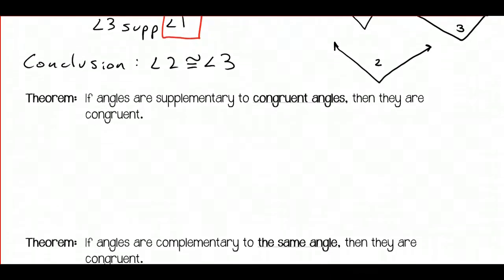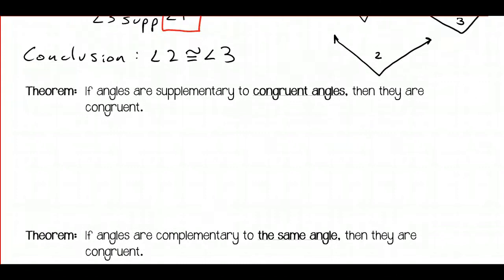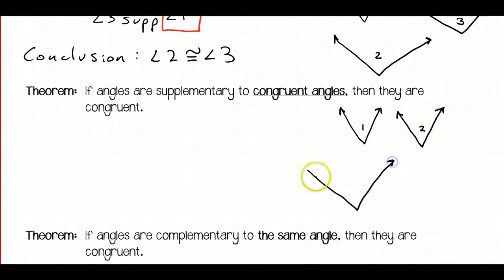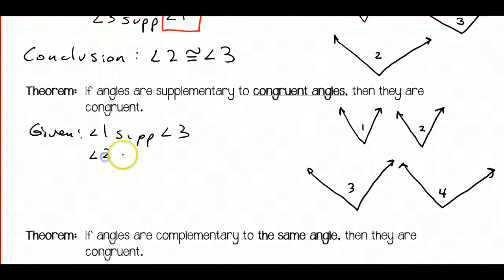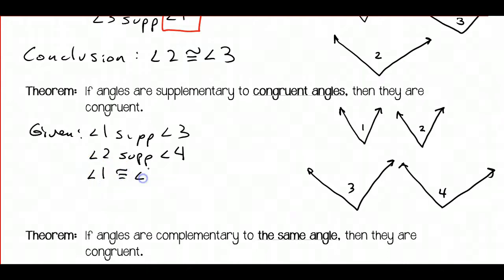If angles are supplementary to congruent angles, then they are congruent. In this picture we're going to have one more angle. So there's angle 1, angle 2, angle 3, and angle 4. In this case, we would be given that angle 1 is supplementary to angle 3, and angle 2 is supplementary to angle 4. We would also know that angle 1 is congruent to angle 2.